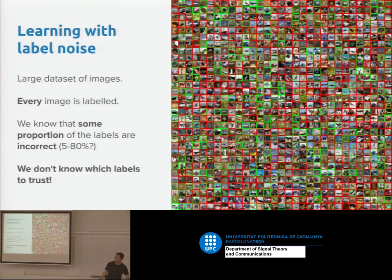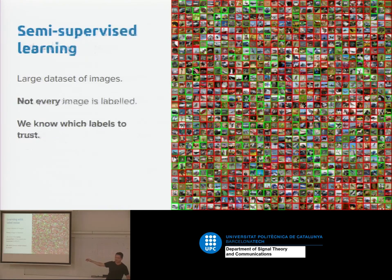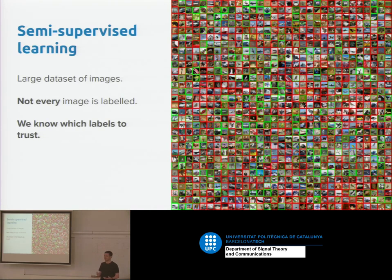The scenario when learning with label noise looks like this: every image is labeled but we know only some proportion of the labels are correct, and we don't know which ones are the good ones. The relationship with semi-supervised learning is that there are some things we don't know the labels for, but in semi-supervised learning it's a little easier because we have a subset of labels we are confident are correct — we know which ones we can trust.